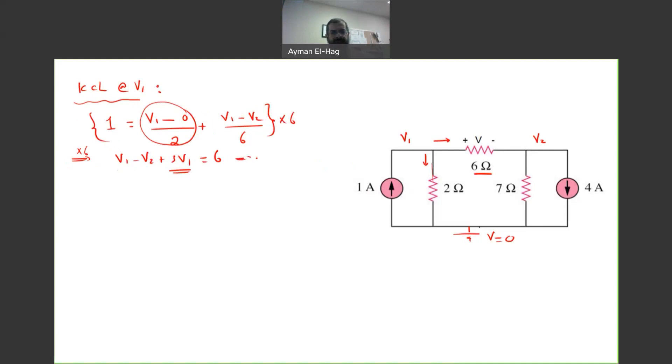So, we will have here 4V1 minus V2 is equal to six. And this is my first equation.